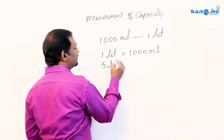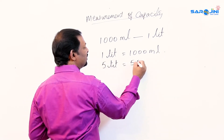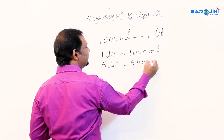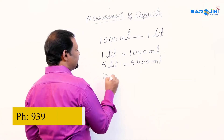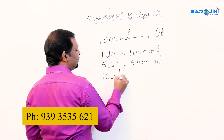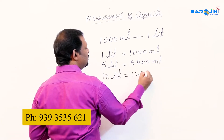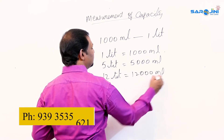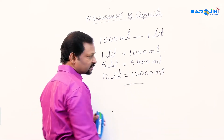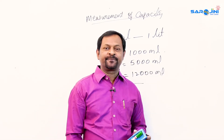If it is 5 liters, then it is 5000 milliliters. If it is 12 liters, it is 12,000 milliliters. I hope you understood the concept.